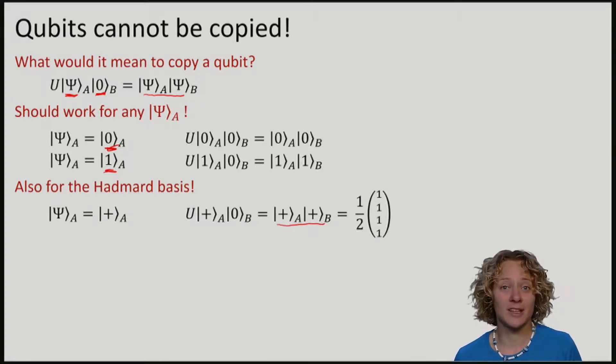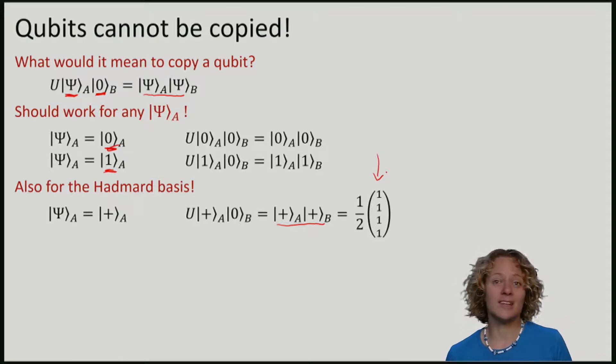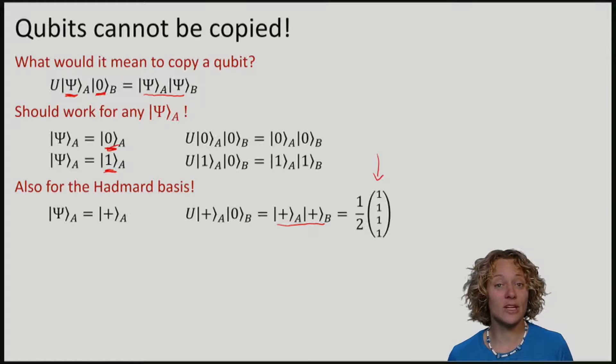Let's write out the state |+⟩|+⟩. We've done this computation before, and what we get is the equal superposition. So if such a copy machine, such an operation U, existed, then this should be true.